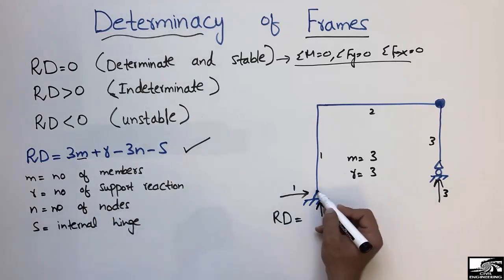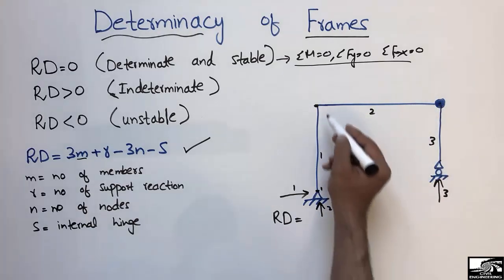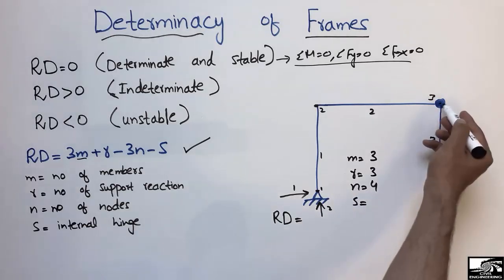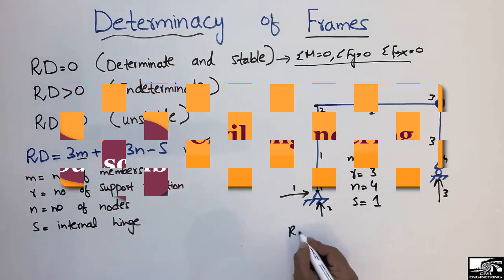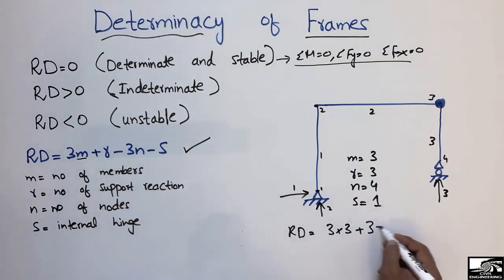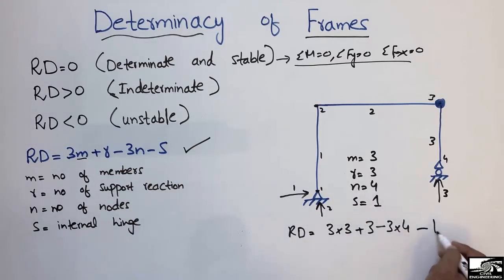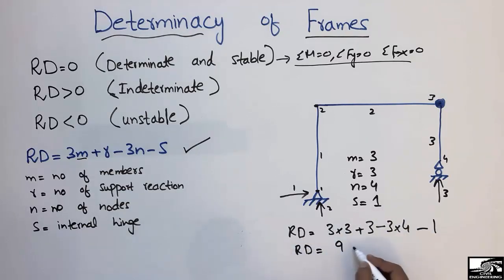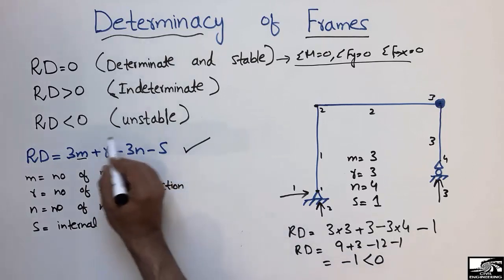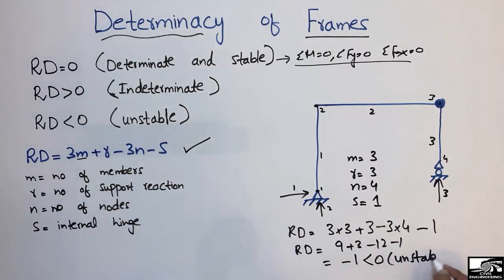The number of nodes n: counting the joints — one, two, three, four — so n equals four. The number of internal hinges s equals one. Putting these into the formula: Rd = 3(3) + 3 - 3(4) - 1 = 9 + 3 - 12 - 1 = -1, which is less than zero. Therefore this structure is unstable and will fall down upon loading.